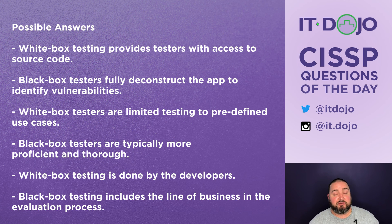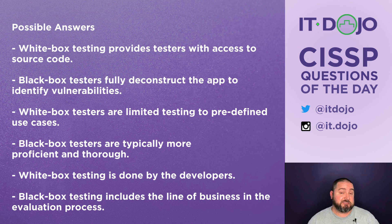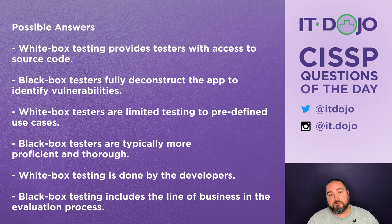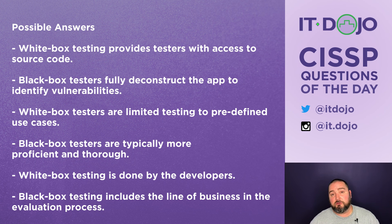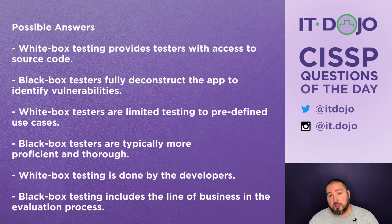Black box testing has several advantages. With a giant amount of code it's easier to test because the focus is on does it work, not all the inner details of how the code is actually functioning. It also focuses on the user's experience — does the software work the way the user needs it to? The tester doesn't require any particular coding skill or knowledge, and they don't need access to the source code.